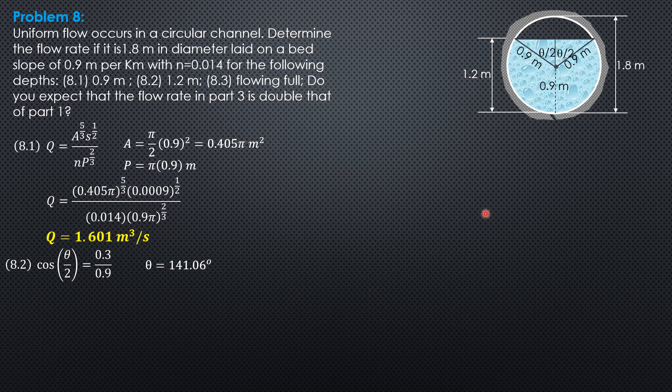Then the area is area of this big sector, whose angle is 360 minus theta, plus area of triangle. Area of sector is 1.2 radius squared times central angle in radians, while area of triangle is 1.2 radius squared sine of included angle, sine of theta.